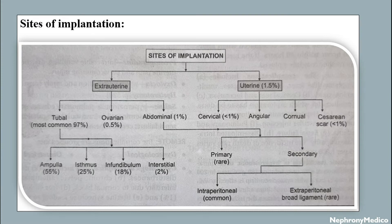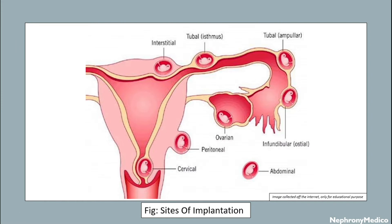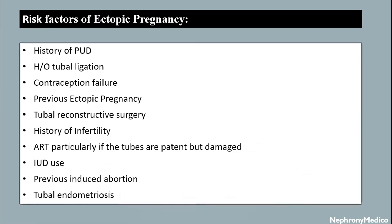Sites of implantation may be extra-uterine or uterine. Extra-uterine includes tubal, ovarian, and abdominal. Tubal sites include ampulla, infundibulum, and interstitial. Uterine sites include cervical, angular, cornual, or caesarean scar. Abdominal implantation may be primary or secondary; secondary may be intraperitoneal, which is common, while extraperitoneal and broad ligament are rare. A picture showing sites of implantation is provided.